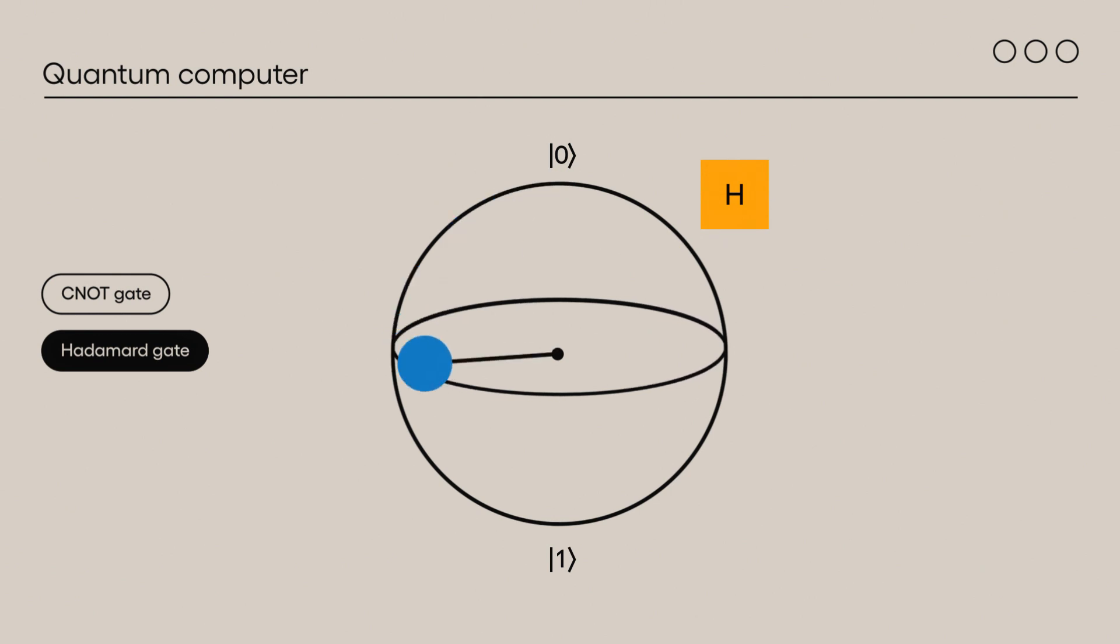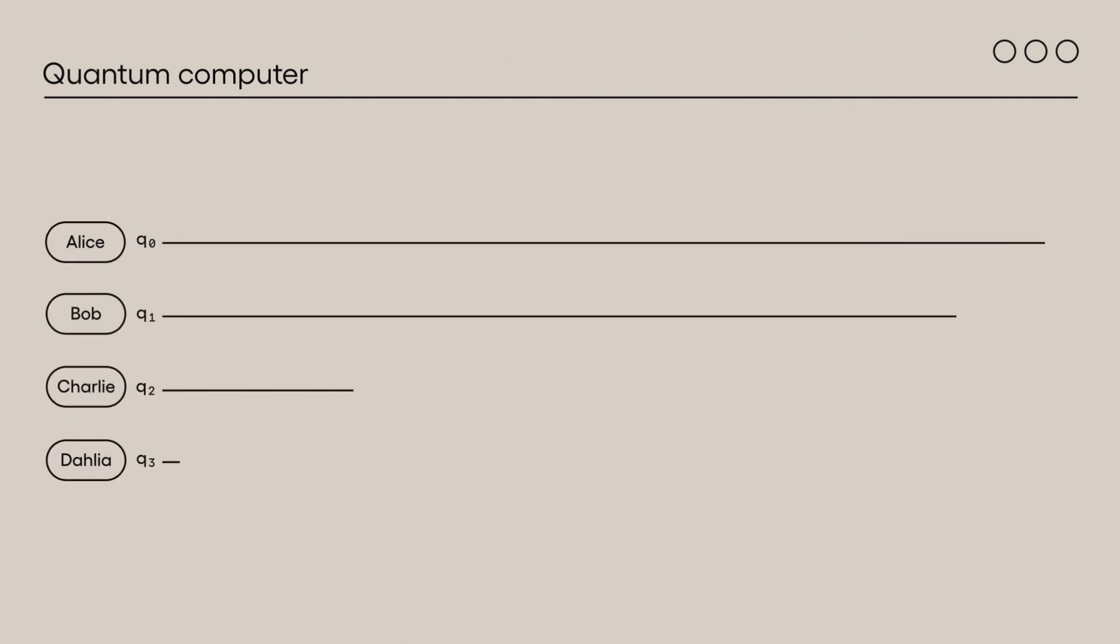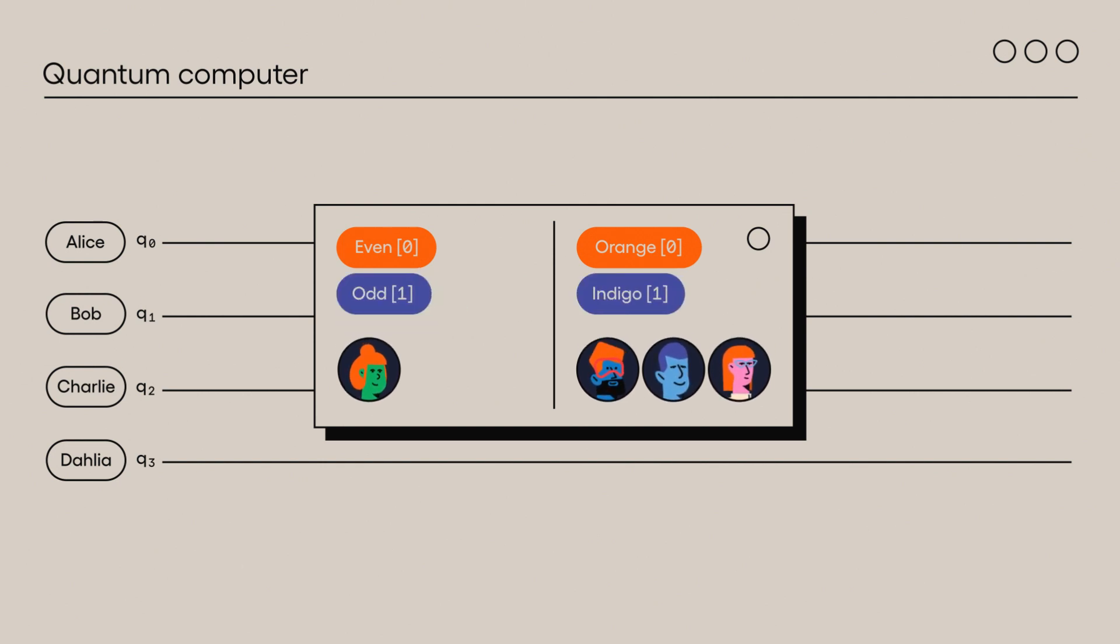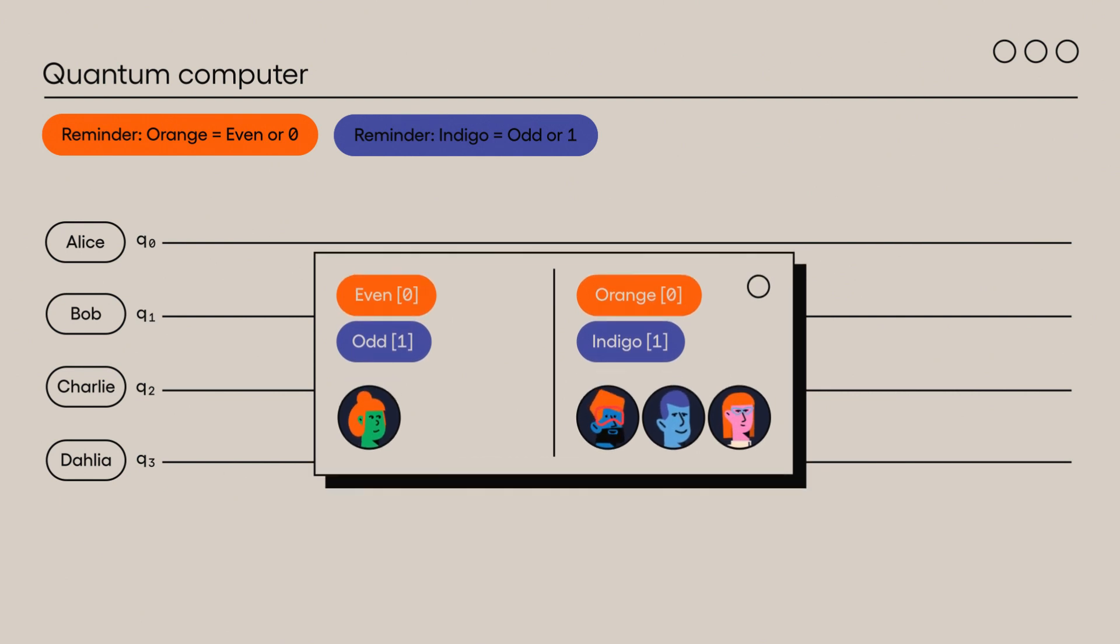The Hadamard gate places a qubit in a superposition of zero and one states. The Hadamard gate creates a 50% chance of obtaining one state or the other, thereby allowing us to explore all possibilities in parallel. Qubits zero to three have been assigned to represent you and your teammates.